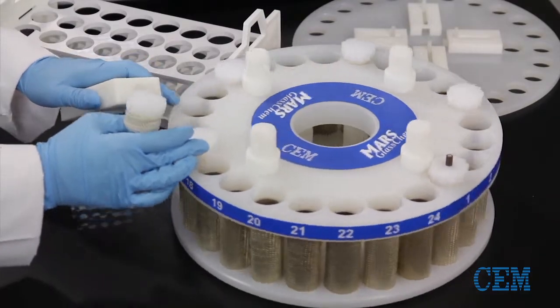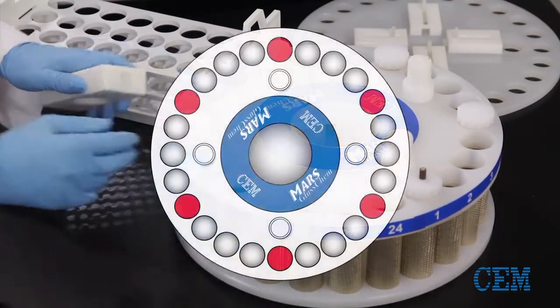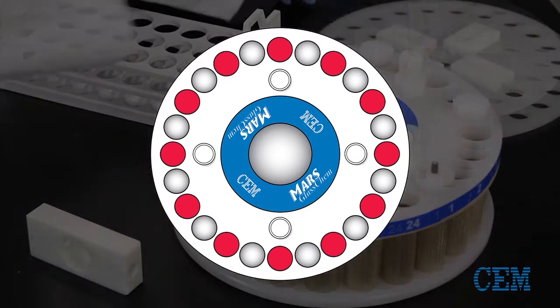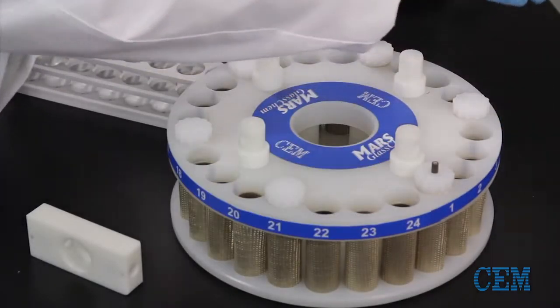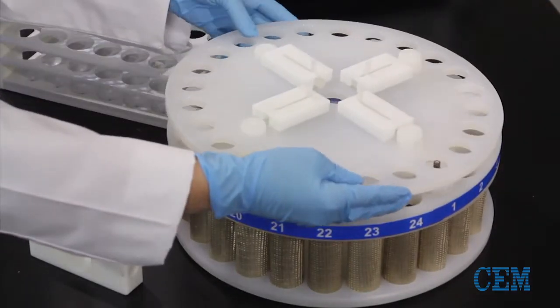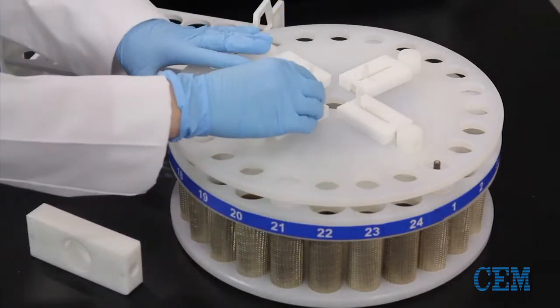Be sure that the vessels are evenly placed in the carousel as this is crucial for safety during microwave heating. Then, place the turntable shield on the carousel and engage all four pins.